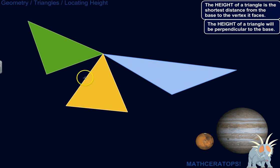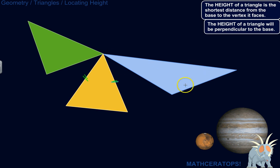We'll do an isosceles triangle — that's a triangle with two congruent sides. Then we'll do a right triangle. And then we'll do this obtuse triangle with a large angle. An obtuse triangle is a triangle with an angle that's greater than 90 degrees and less than 180 degrees — otherwise it couldn't be a triangle. So, we'll find the height for each one of these.